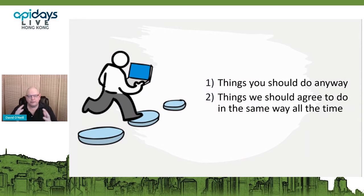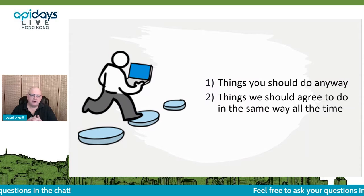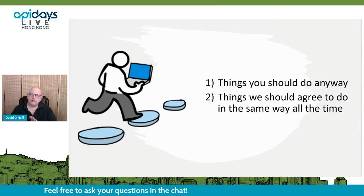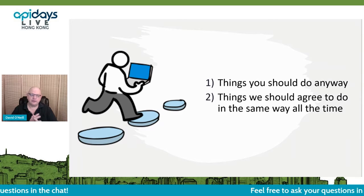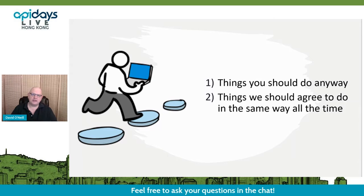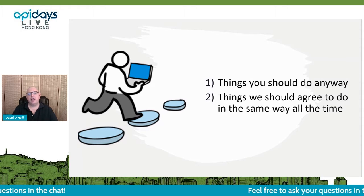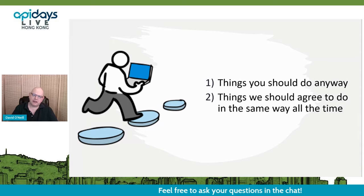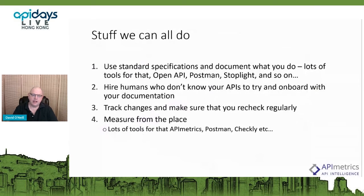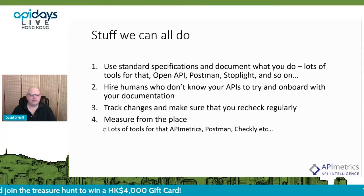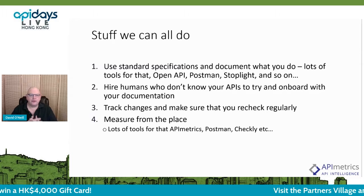Bringing this all together — there are things we should do anyway, and things we should agree to do the same way all the time. For the things we can all do: use standard specifications and document what you do. There are so many good tools for that. People should use OpenAPI specs. You can use Postman, Stoplight for documentation, Swagger UI — lots of products available.